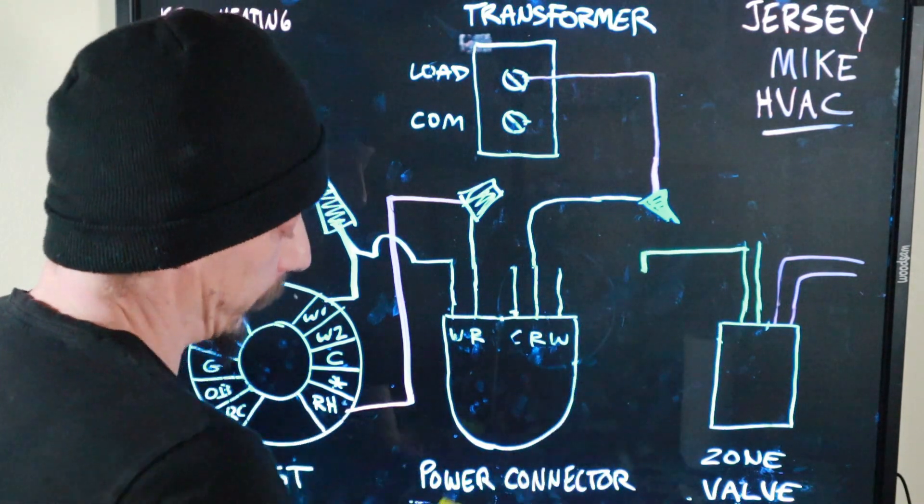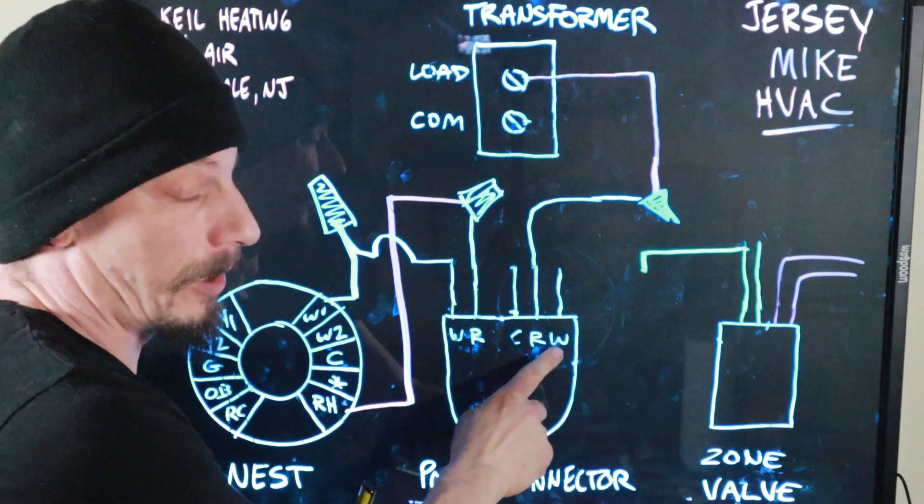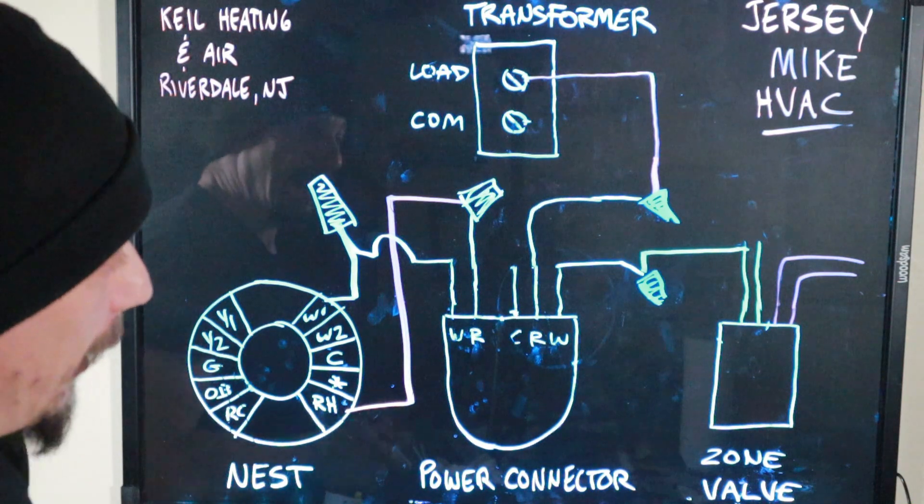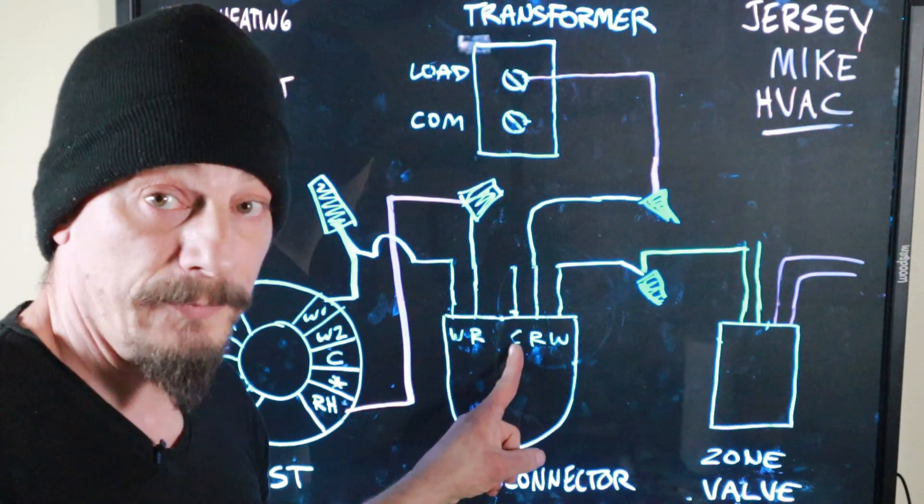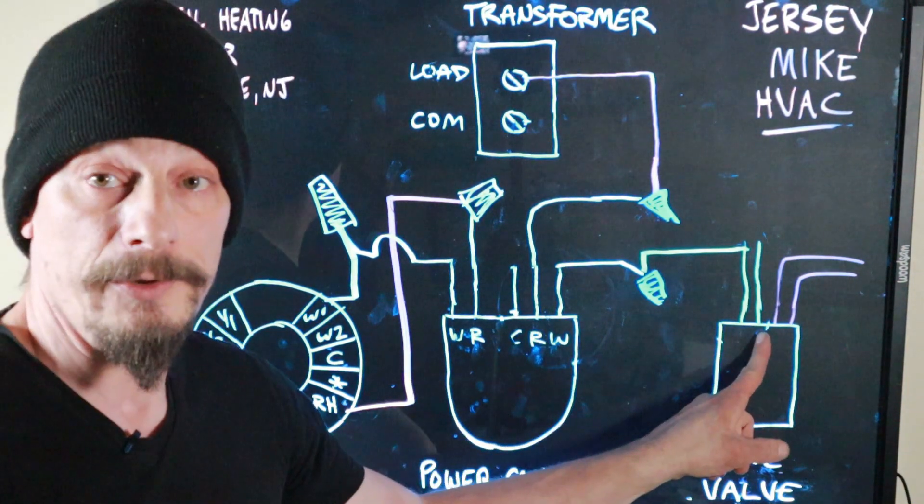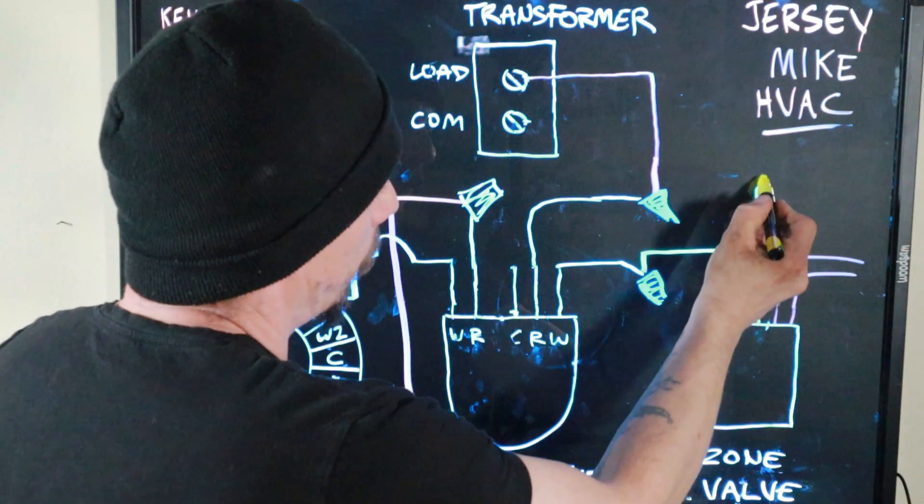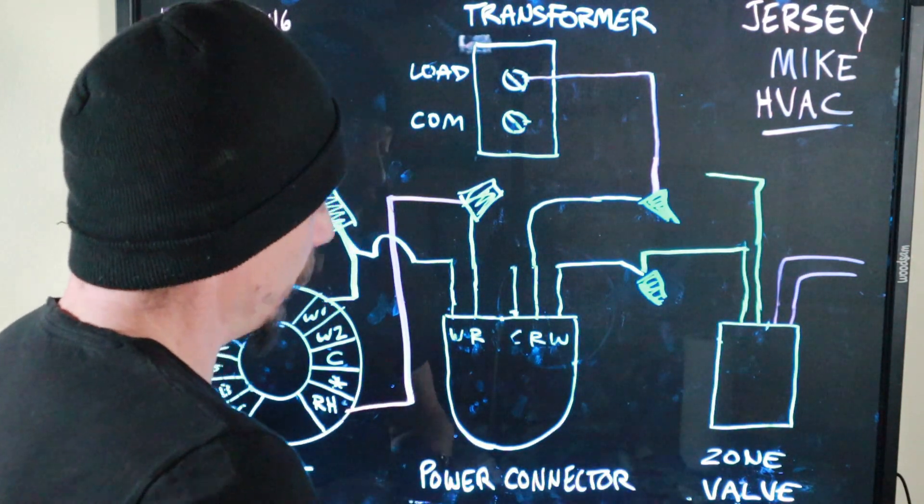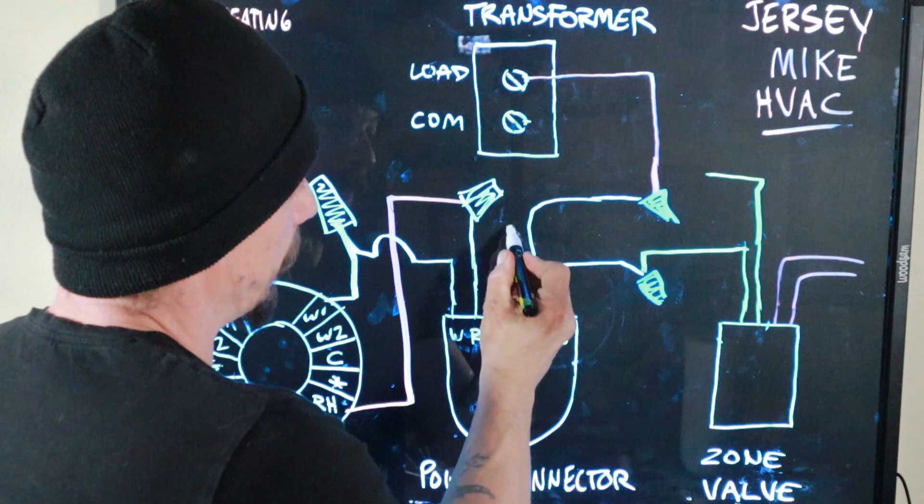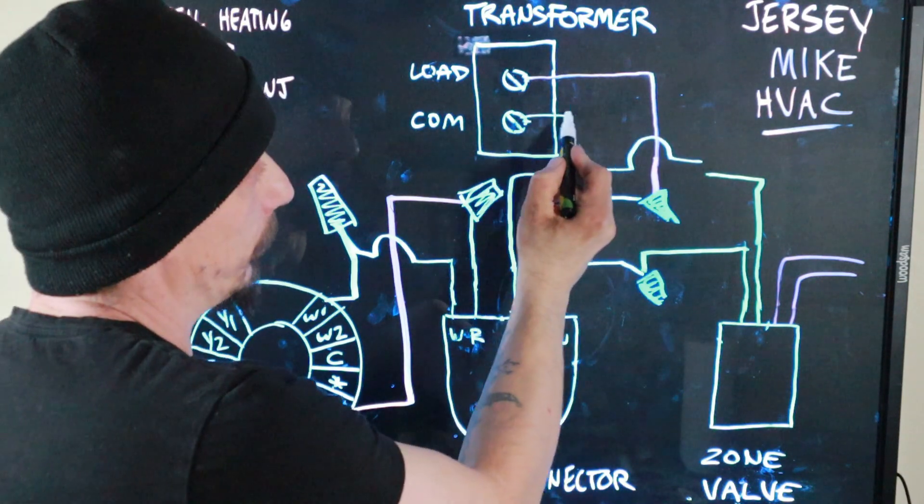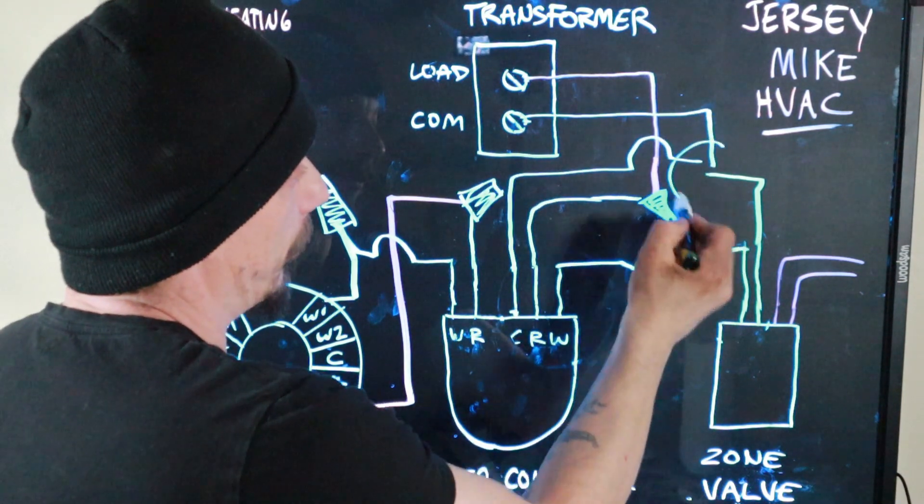So now all you got left is the common wire from your power connector and the other yellow wire on your zone valve. Yellow wire from the zone valve, common wire from the power connector, common wire from the transformer, all coming together right there.